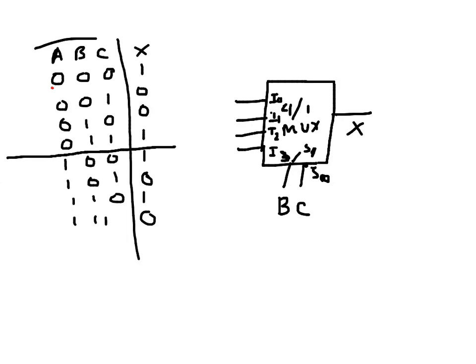From the truth table, I0 corresponds to the rows where BC is 0-0, and I1 corresponds to BC equal to 0-1. When the select pins are 0-0, I0 is routed to the output; when BC is 0-1, I1 goes to the output, and so on.